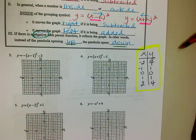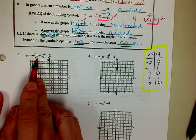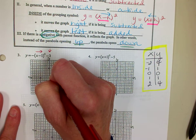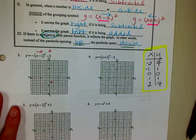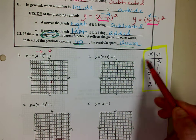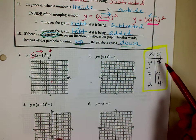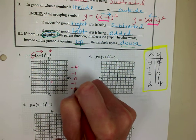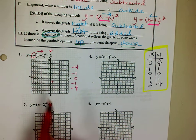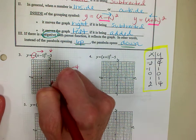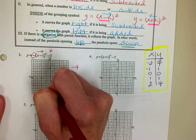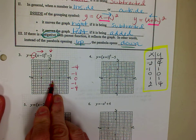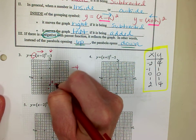First I have to move my graph. If I have a number inside, I do the opposite, so I'm going to go to the right one. The number by itself means I go down 3. So to the right 1, down 3 — that is my new vertex. Now I do have a negative, so that's going to change all the y values to their opposite sign. So: negative 2, down 4; negative 1, down 1; 0, 0 — right there at the moved origin; over 1, down 1; over 2, down 4. It's going to open downward.